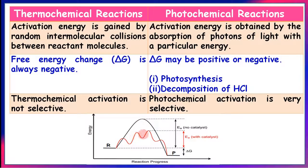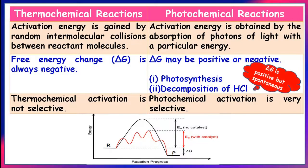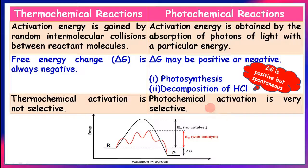The free energy change for a thermochemical reaction is always negative, whereas for a photochemical reaction it may be positive or negative. For example, in photosynthesis and decomposition of HCl, delta G is positive but the reactions are spontaneous. Thermochemical activation is not selective — if heat is passed on a mixture of nitrogen and hydrogen, both molecules absorb heat. But if light of 400 nanometers is passed on a mixture of hydrogen and chlorine, selectively only chlorine molecules absorb light. Therefore, photochemical activation is selective.